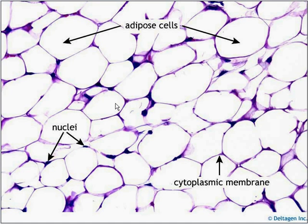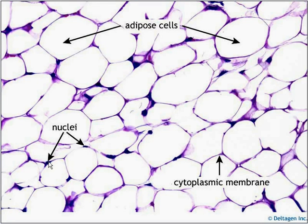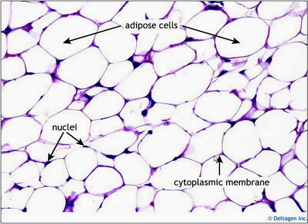What I like about this image is that it literally shows you all the structures. The nucleus is basically any dark spots that stick out on the border of each adipose cell. The adipose cell is one of these white cell blocks, and the cytoplasmic membrane is basically the outside of the adipose block.